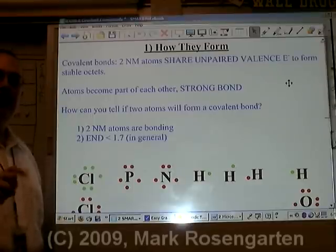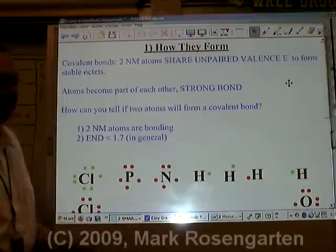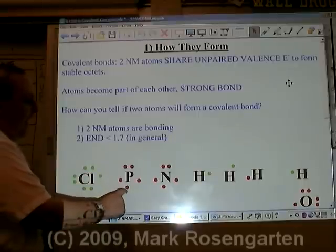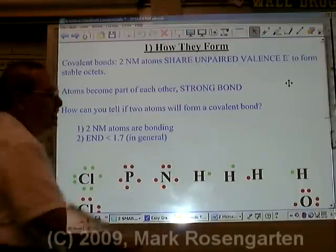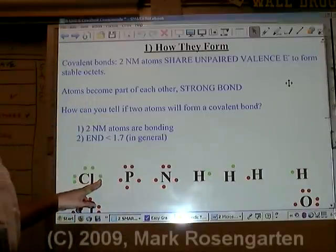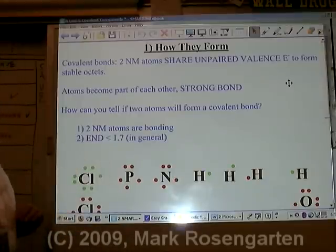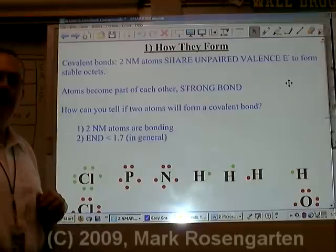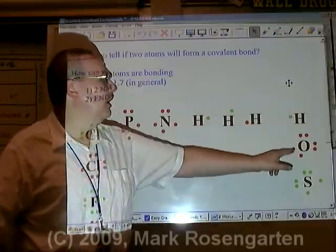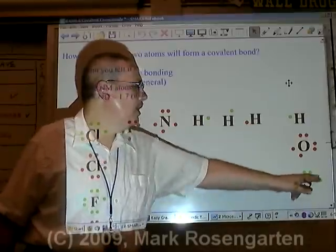The word covalent means to share valence electrons. You can tell how many covalent bonds an element can form by the number of unpaired electrons in the dot diagram of that particular element. Chlorine has one unpaired electron — it can form one covalent bond. Phosphorus has three unpaired electrons — it can form three covalent bonds. Nitrogen also has three unpaired electrons, so it can form three covalent bonds. Oxygen and sulfur each have two unpaired electrons, so they can form two covalent bonds.